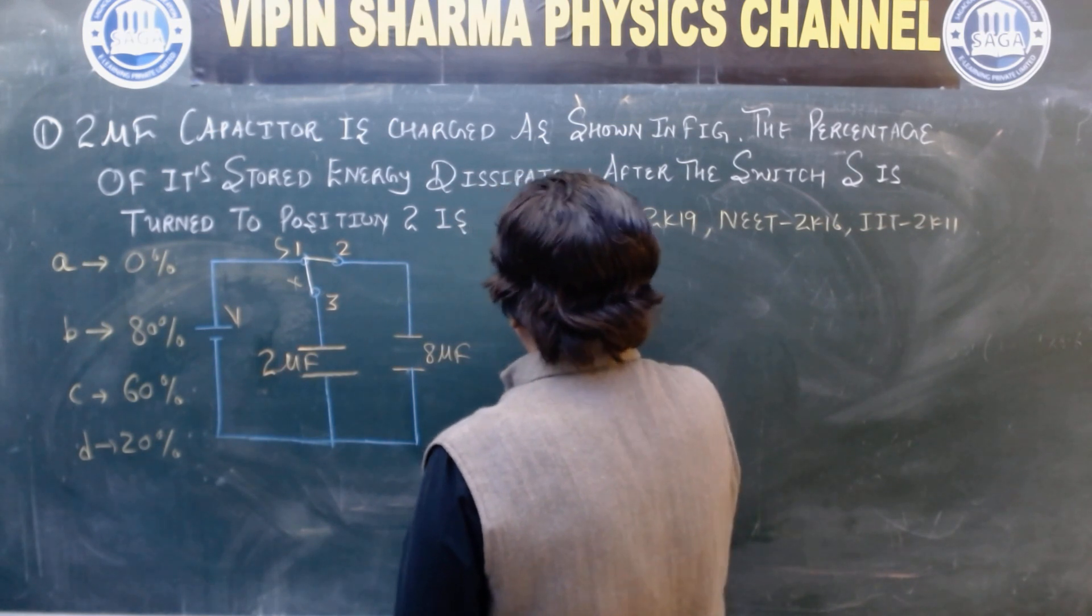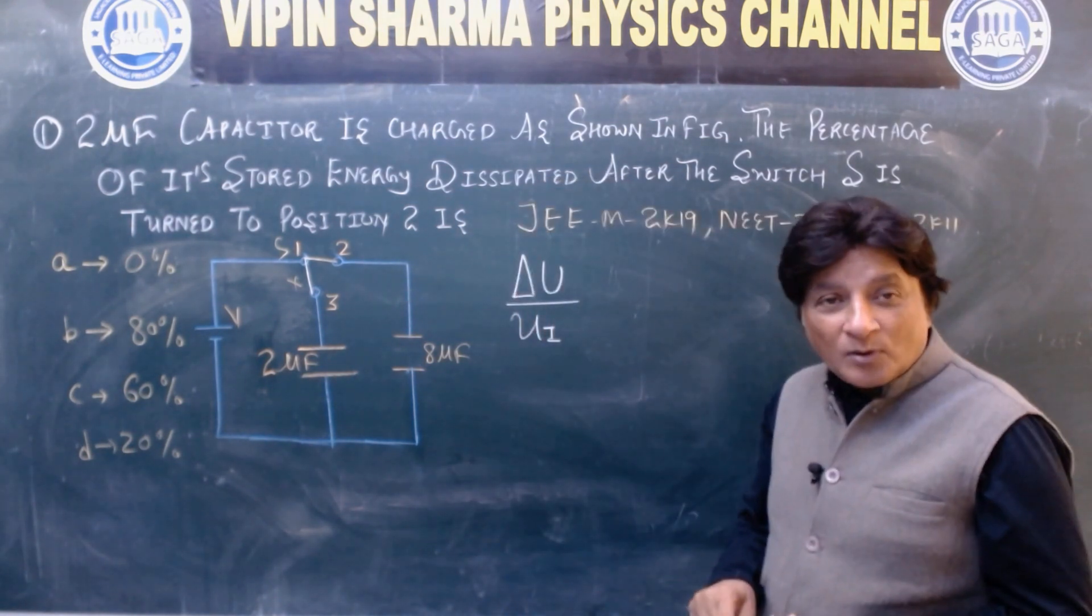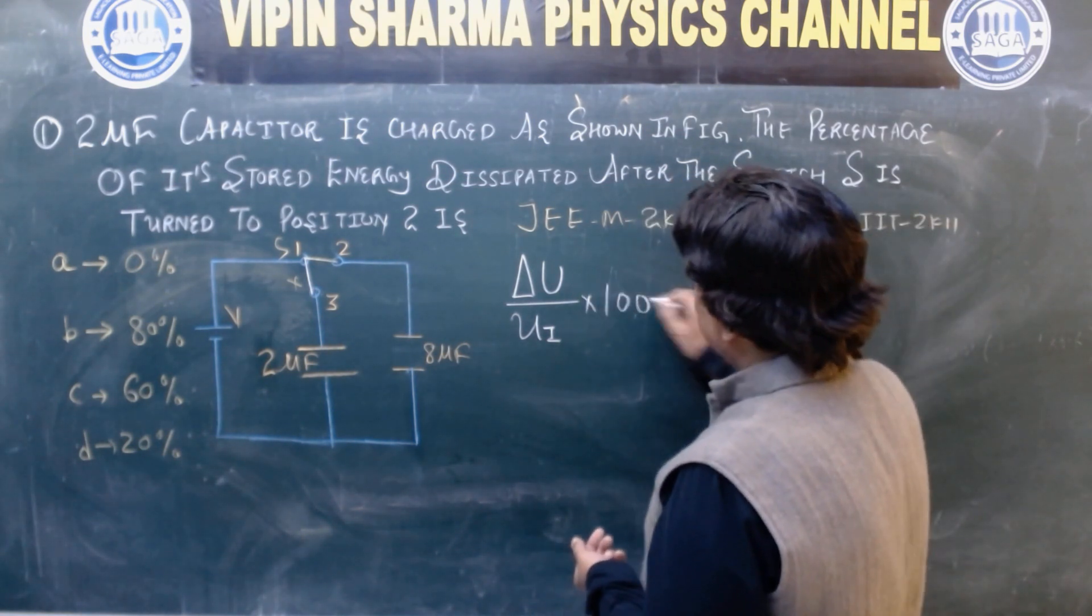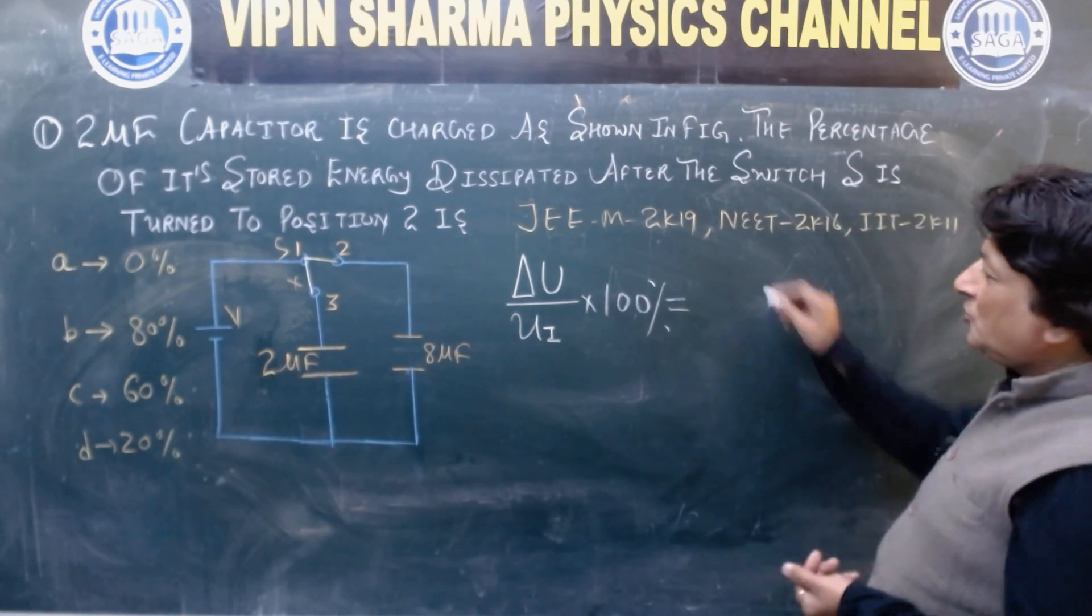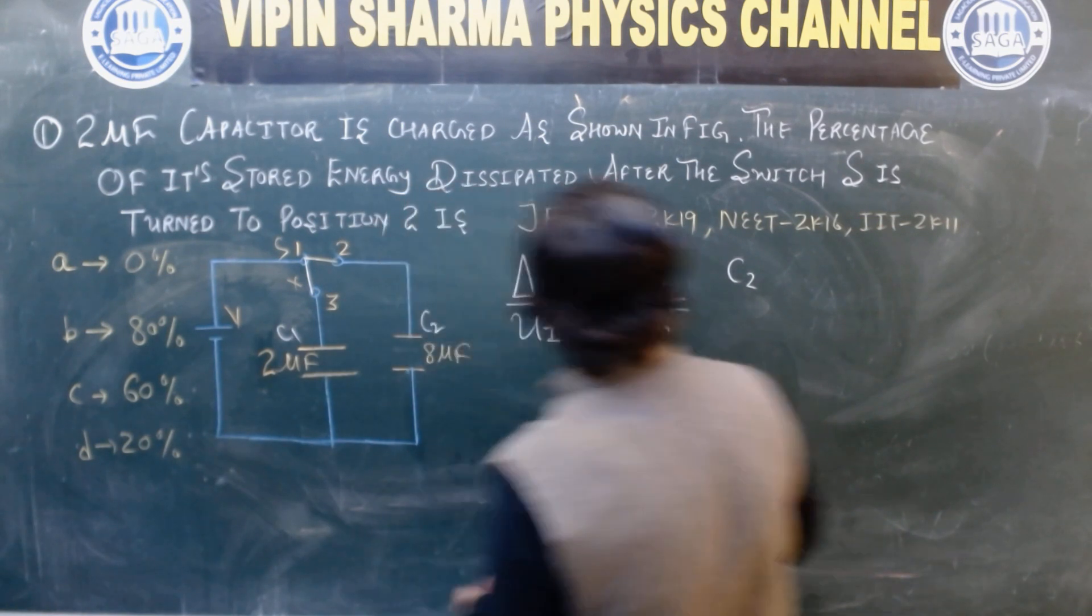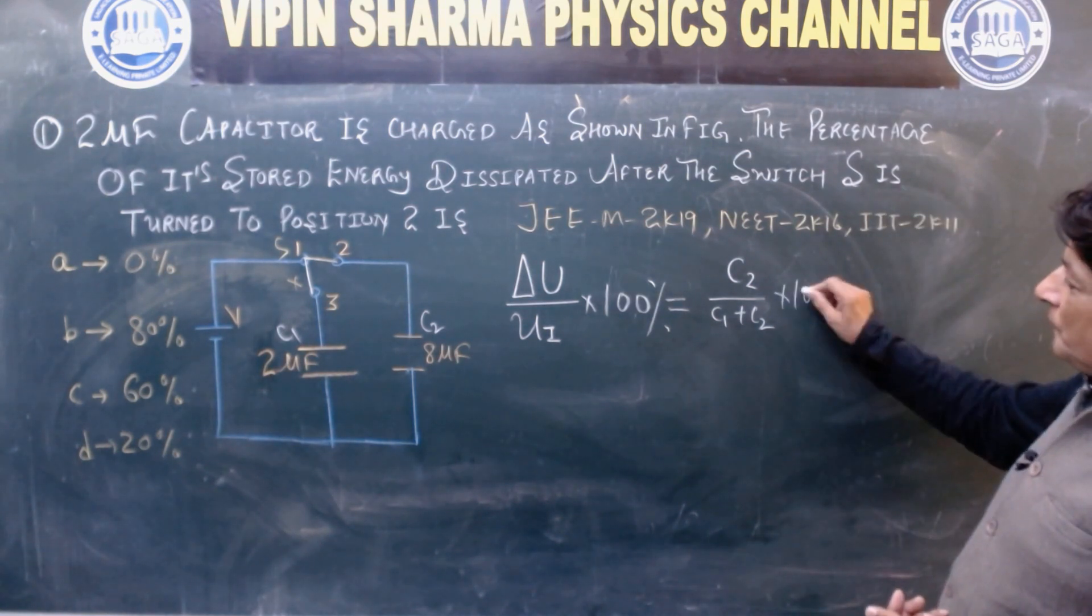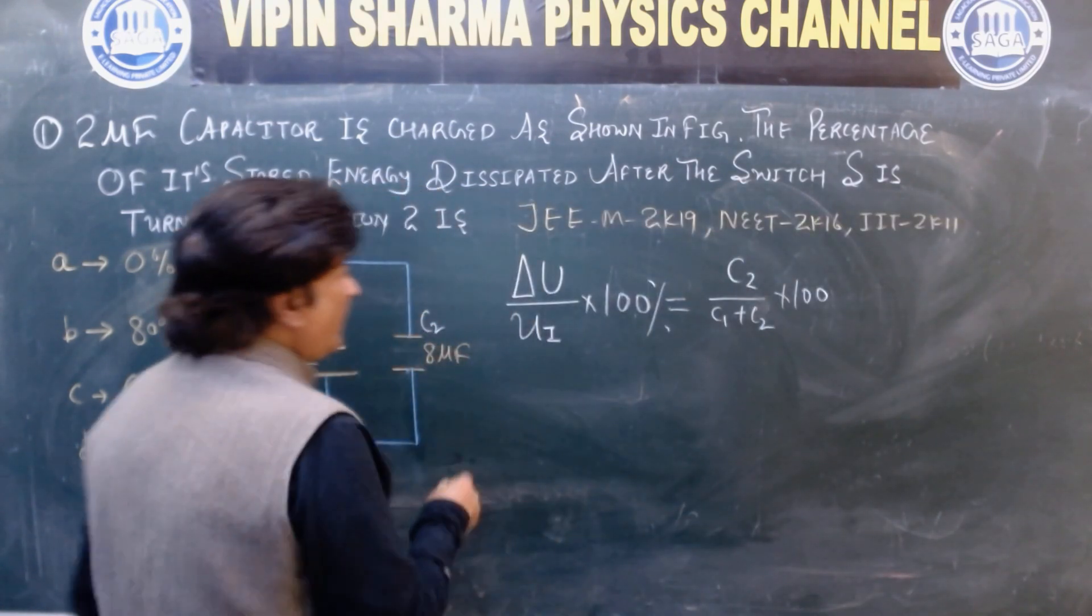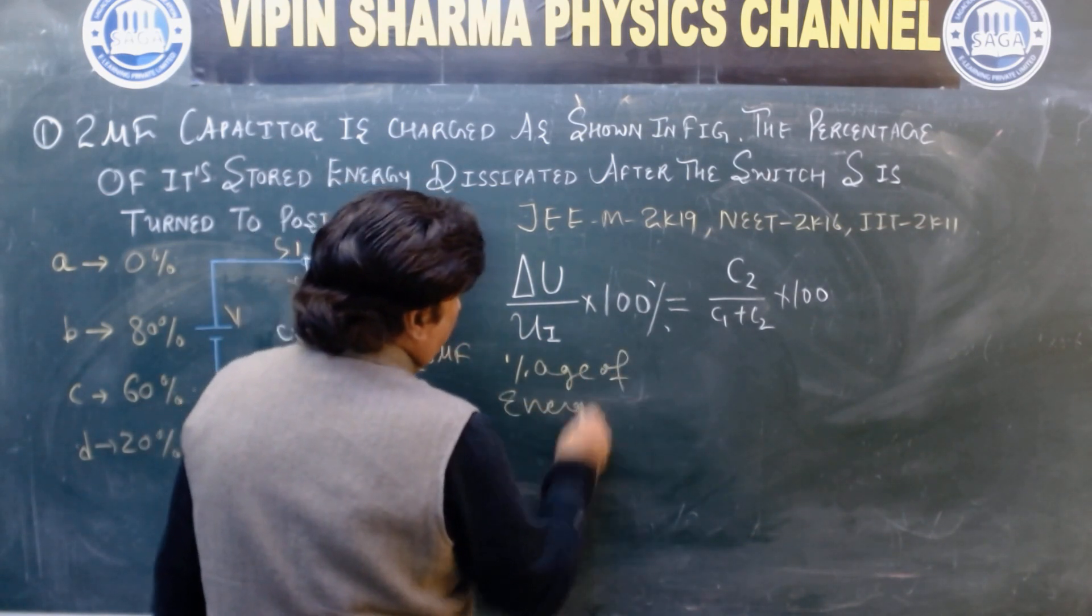And if we talk about fractional energy loss, total delta U upon initial energy into 100, that is the fractional energy. I'll give you a technique, a short technique. What is that? Delta U upon Ui into 100.